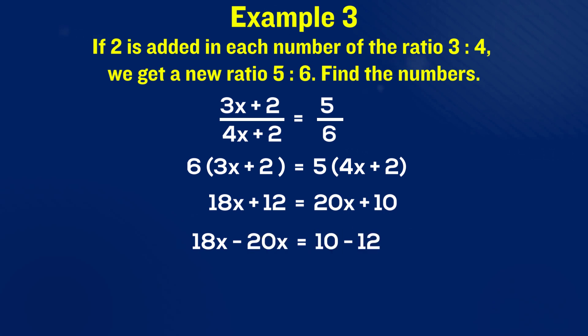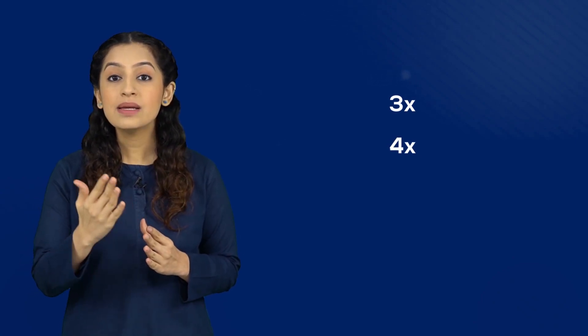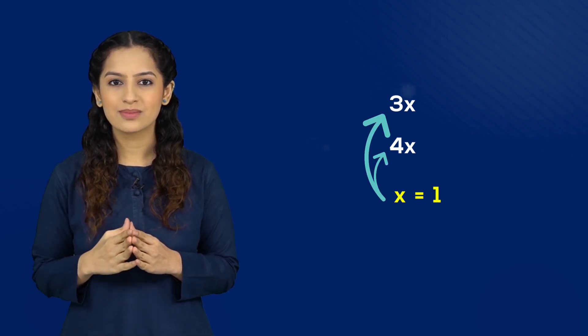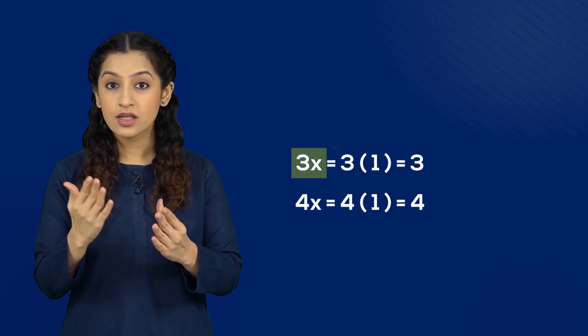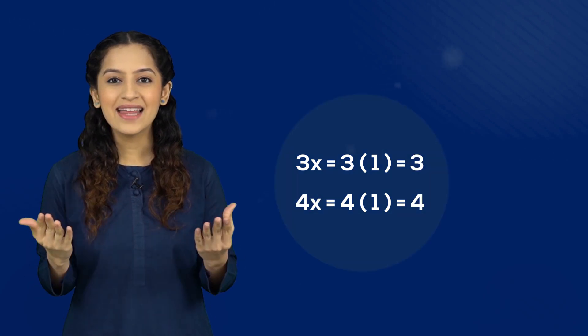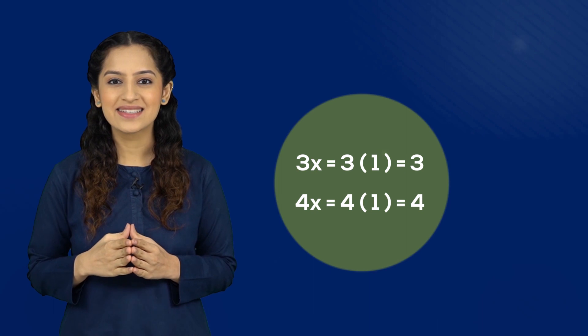Here we get 18x - 20x = 10 - 12. By further simplification we get the value of x to be 1. Recall that we actually had to find the numbers 3x and 4x. It's no big deal, simply multiply this value of x with these to get the required numbers: 3x becomes 3 and 4x becomes 4. And that's it, we found our answers.